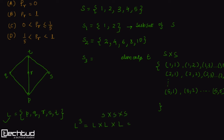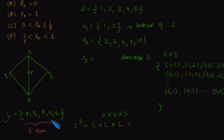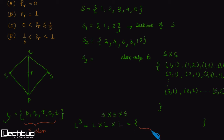So this is what is happening in this question. We are given a lattice L whose Hasse diagram is given in the figure, and we are constructing a set L³ which is nothing but L cross-producted by L cross-producted again with L. The lattice L has a total of 5 elements, so L³ will consist of 5 × 5 × 5 = 125 elements.